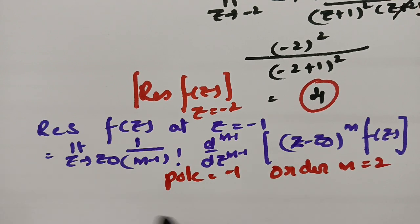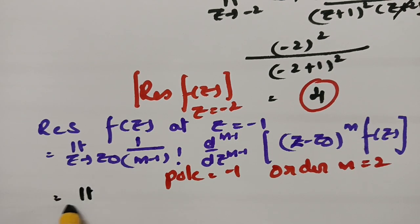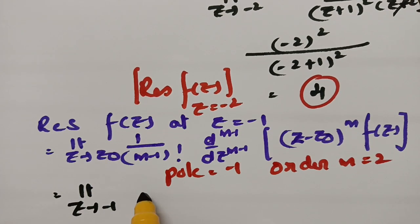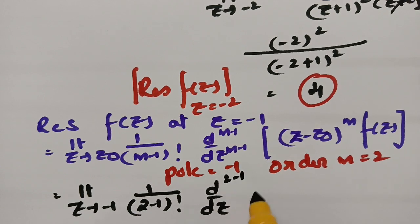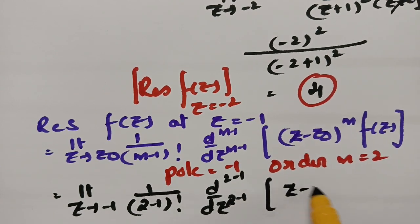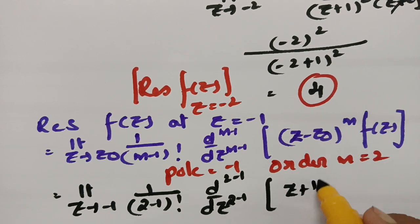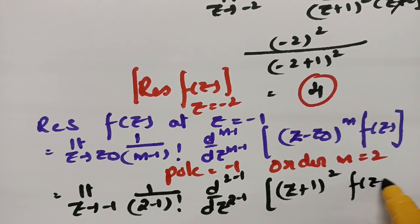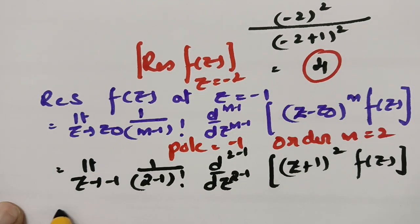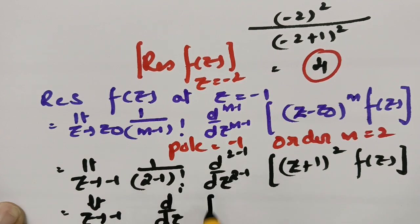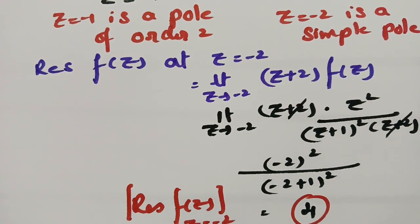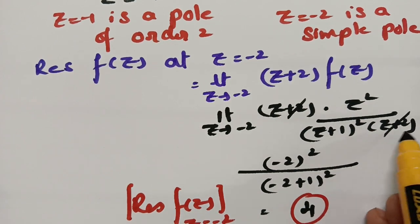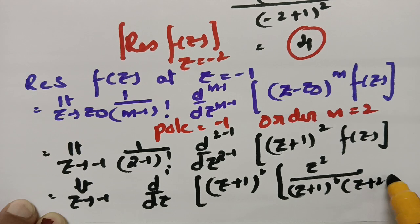Substituting z₀ = -1 and m = 2, this becomes: limit as z → -1 of [1/(2-1)!] · d/dz [(z+1)² · f(z)]. Since f(z) = z² / [(z+1)²(z+2)], canceling (z+1)² leaves: limit as z → -1 of d/dz [z² / (z+2)].